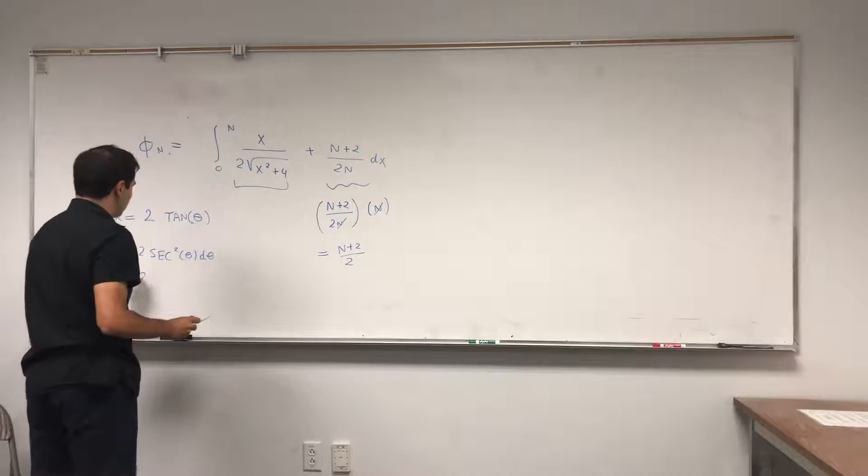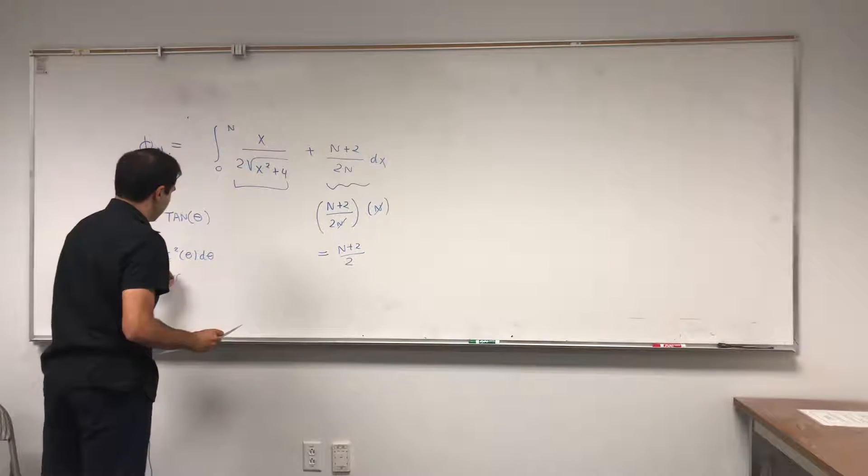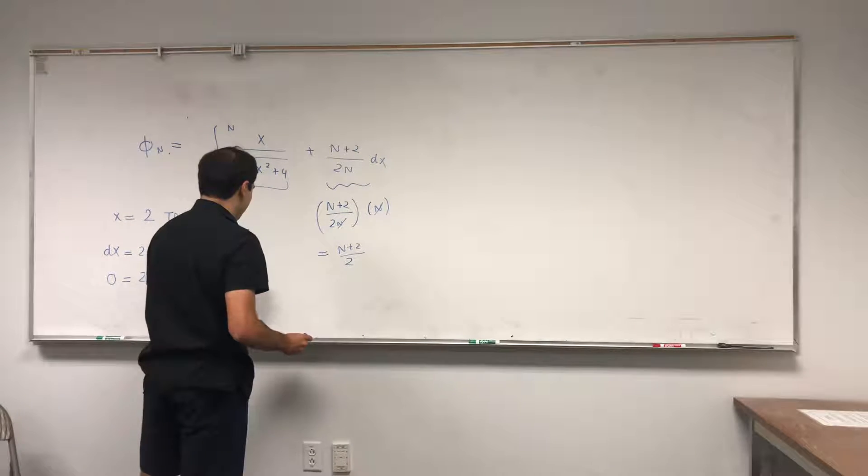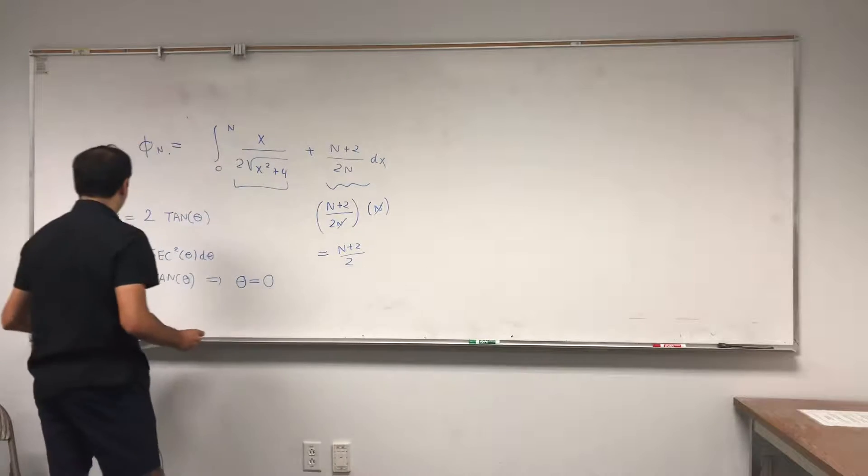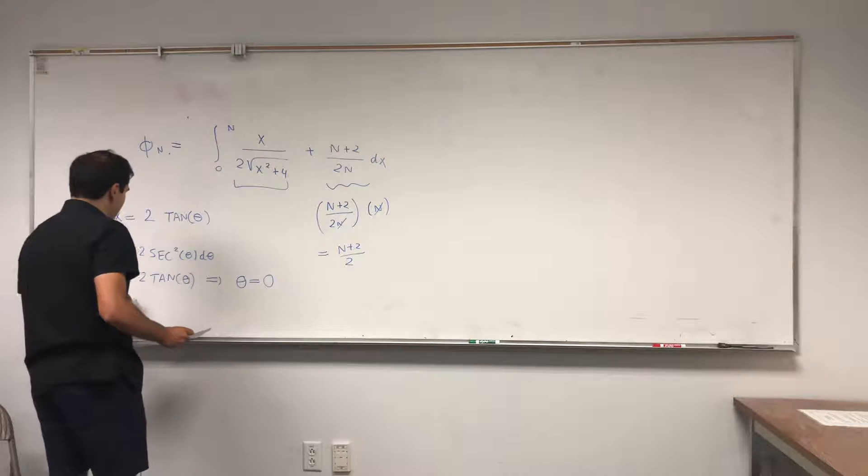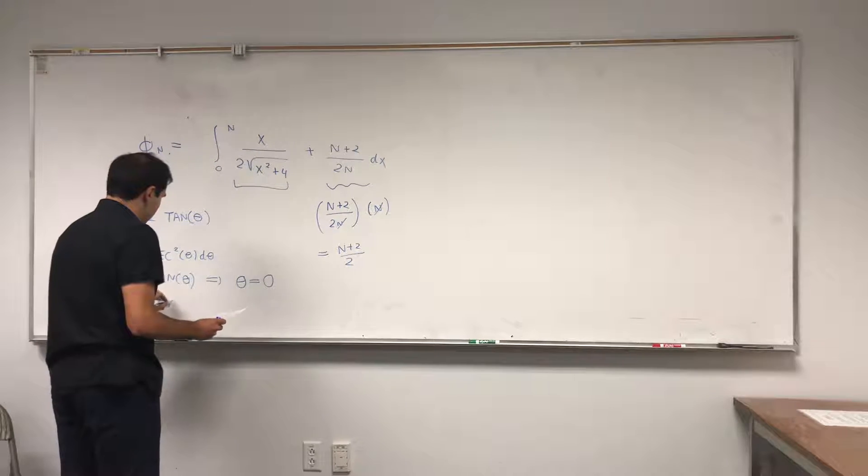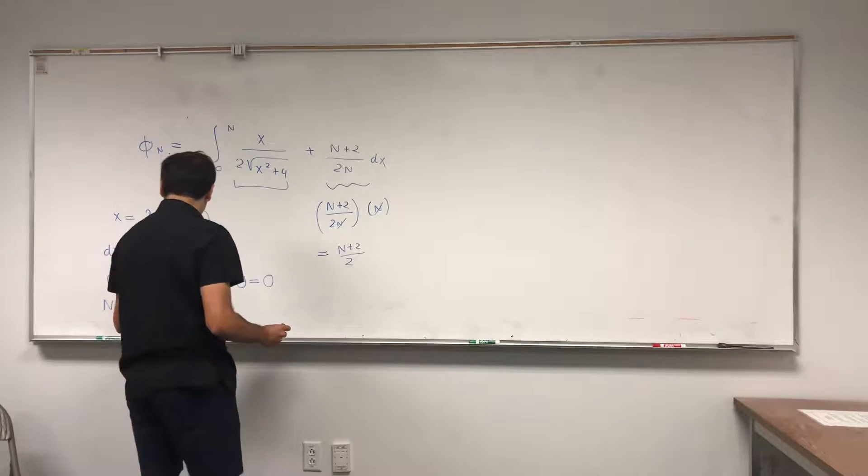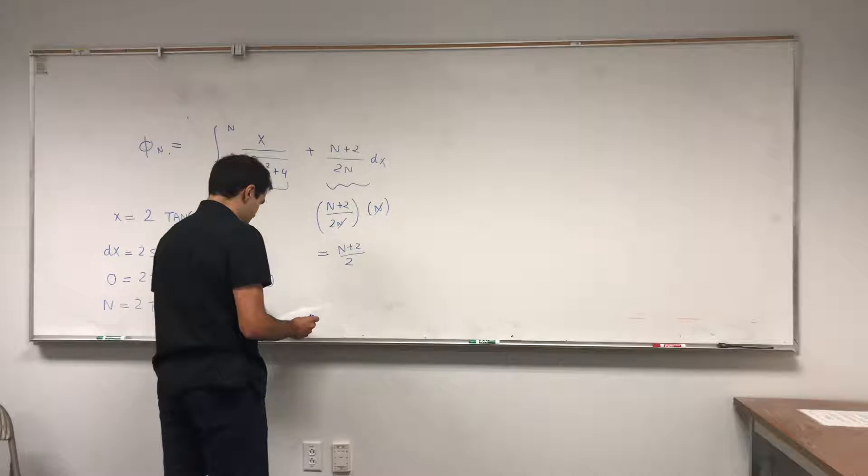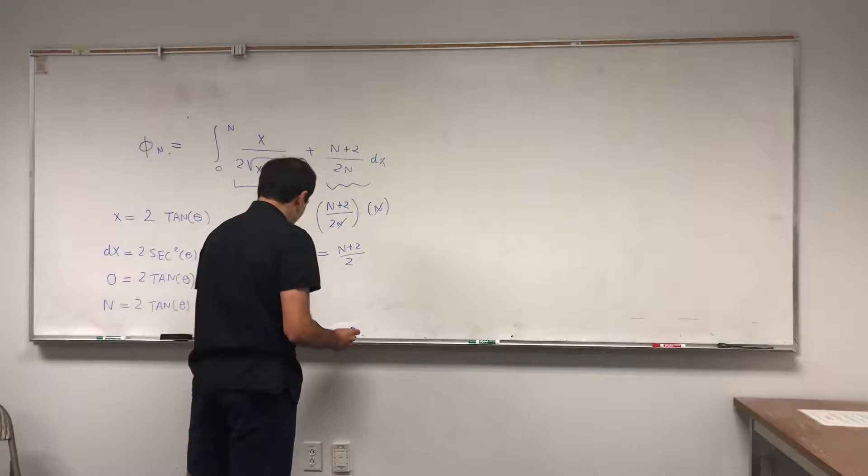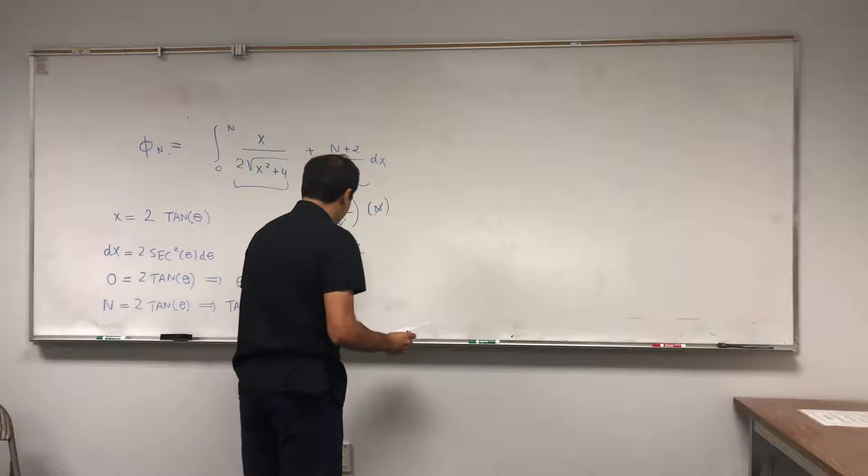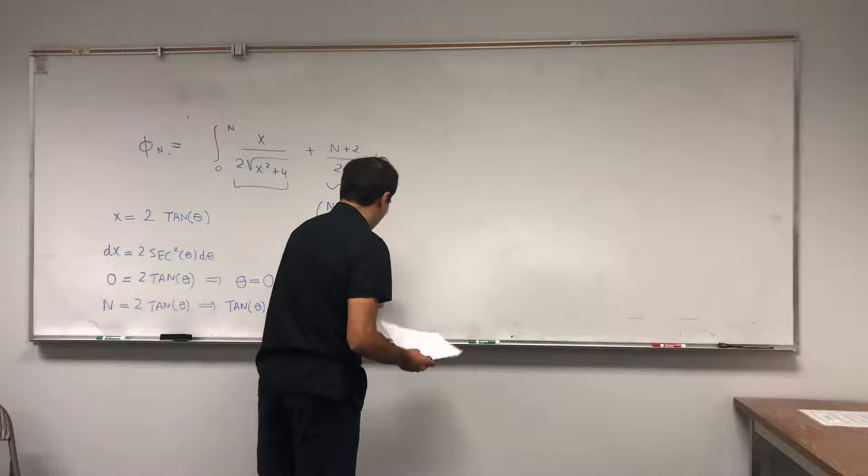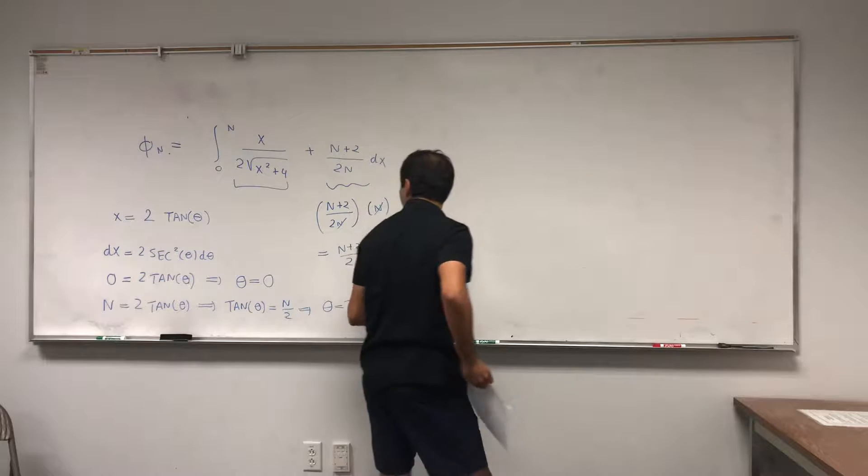And then the endpoints. So 0 equals to 2 tangent theta, that means theta is basically arc tangent of 0 which is 0. And same, n equals to 2 tangent theta, that means tangent of theta equals to n over 2, so theta is arc tangent of n over 2.